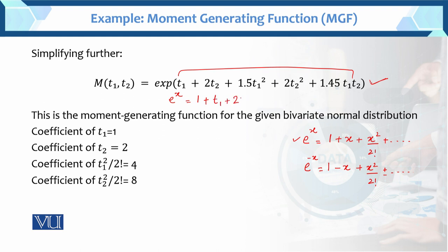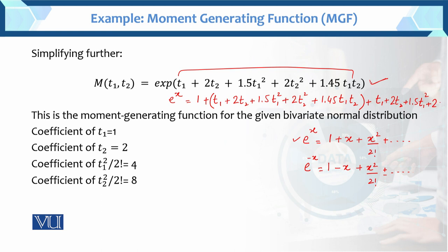So x = t1 + 2t2 + 1.5t1² + 2t2² + 1.45t1t2. The next term is x²/2!, so that becomes (t1 + 2t2 + 1.5t1² + 2t2² + 1.45t1t2)² divided by 2 factorial, and so on.